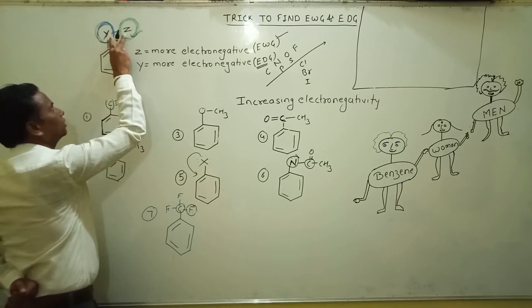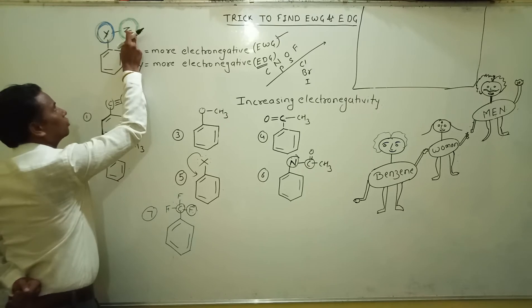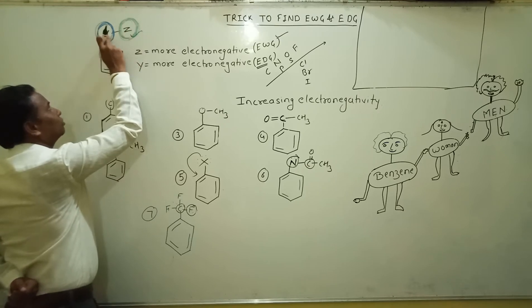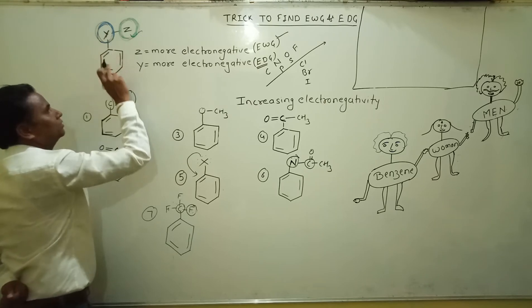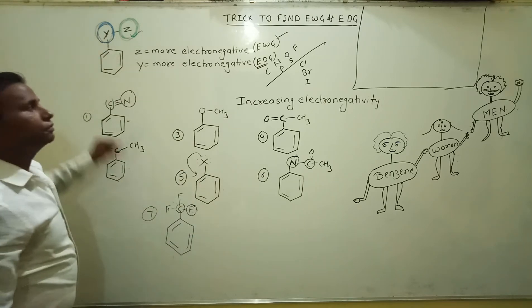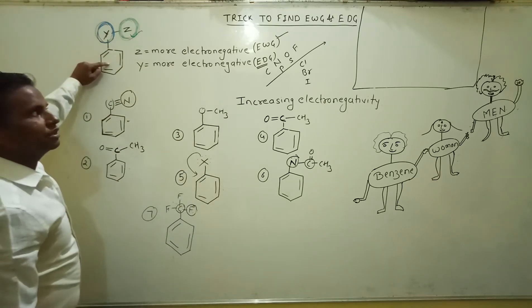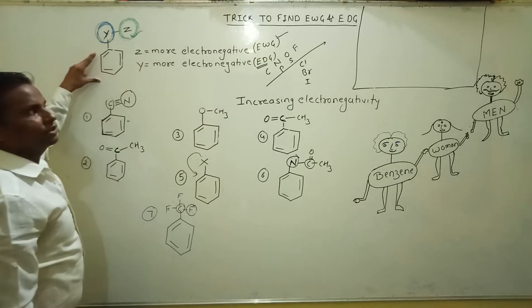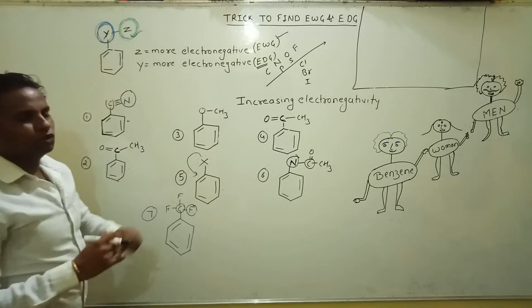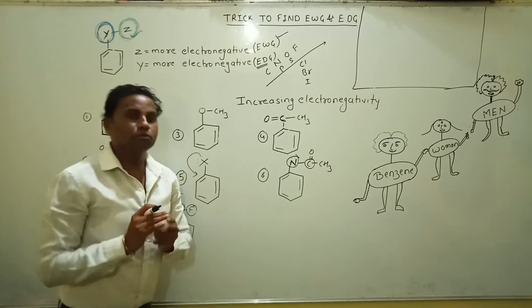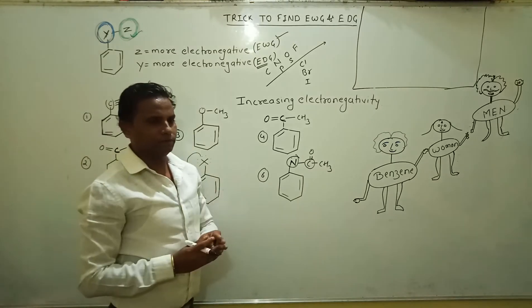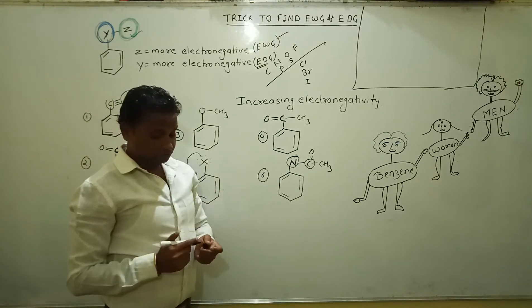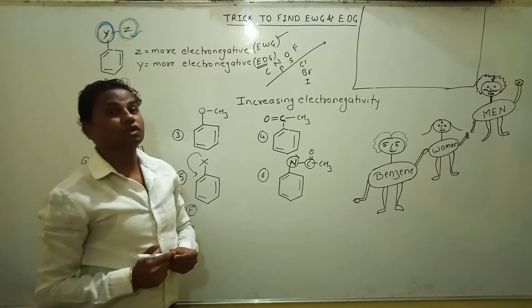Simply, among these two — Y and Z — you compare which one is more electronegative. If Z is more electronegative, it withdraws electrons. If Y is more electronegative, it donates electrons to the benzene ring. Electron withdrawing groups deactivate the benzene ring and electron donating groups activate it. As we move from left to right in the periodic table, electronegativity increases.